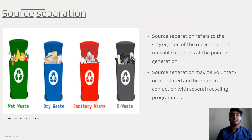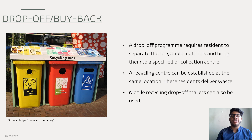The first recycling program element is source suppression. Source suppression refers to the segregation of recyclable and reusable materials at the point of generation. Source suppression may be voluntary or mandated and is done in conjunction with several recycling programs.